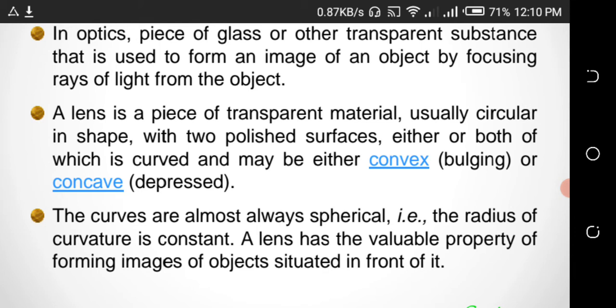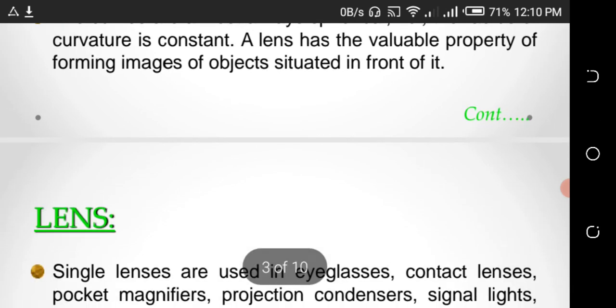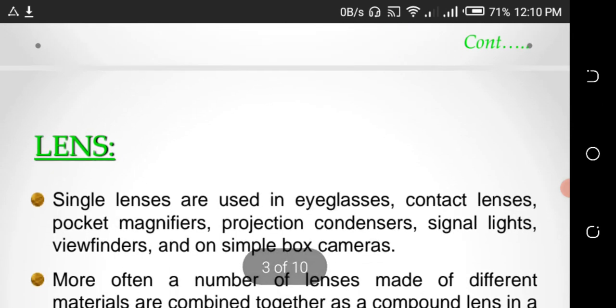The curves are almost always spherical, the radius of curvature is constant. A lens has the valuable property of forming images of objects situated in front of it.